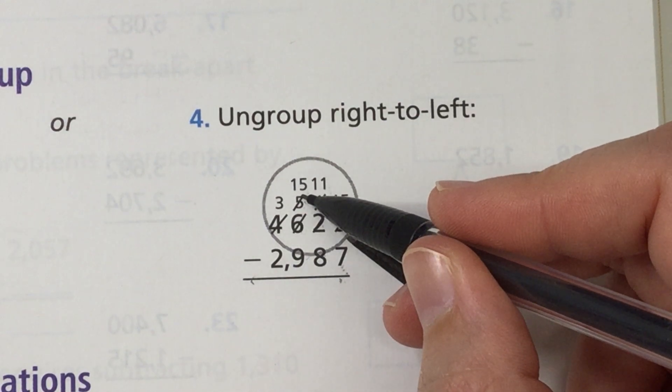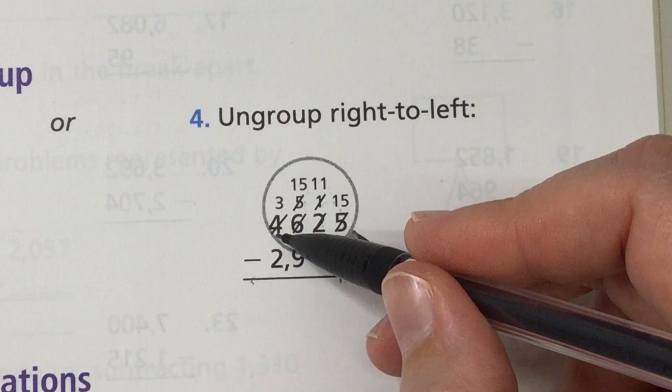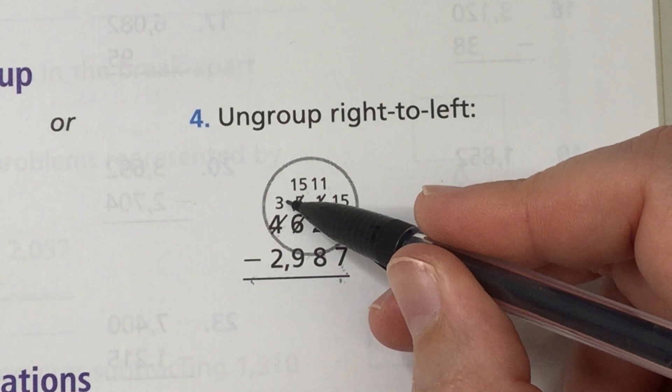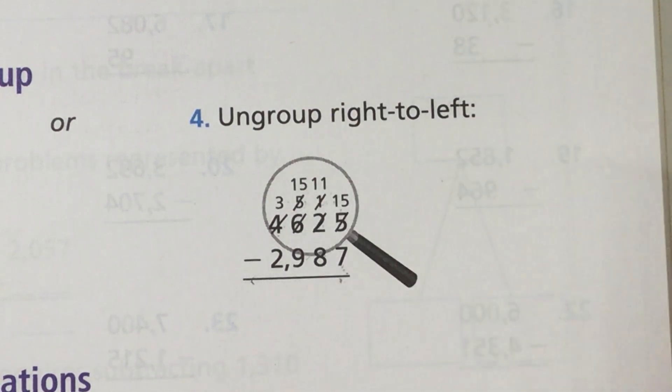Where did it get that 10 plus 5? From the thousands place. And then you can just subtract them.